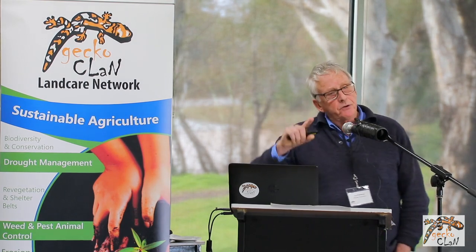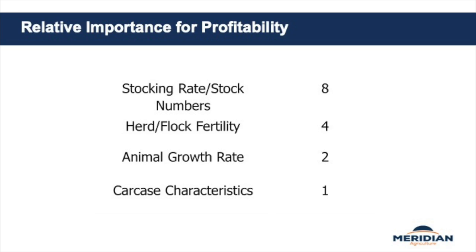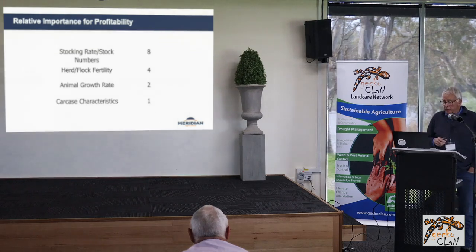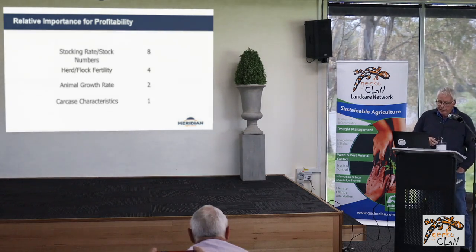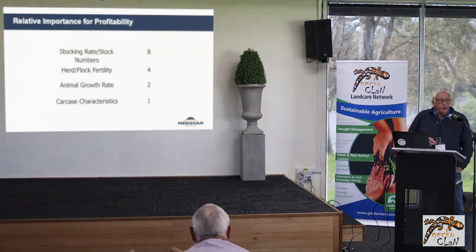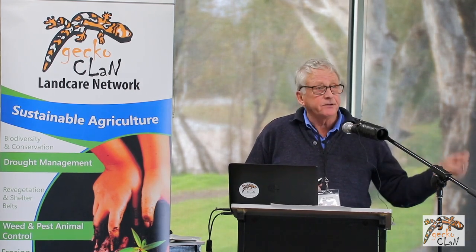I want to segue away from that and come back to it later. In a grazing system, the drivers of profitability in relative importance are: stocking rate and stock numbers, which is twice as important as herd or flock fertility, twice as important as animal growth rate, and animal growth rate is twice as important as carcass characteristics. What drives stocking rate? To me, there are three things: soil fertility — your nutrients and pH; grazing management; and pasture species.